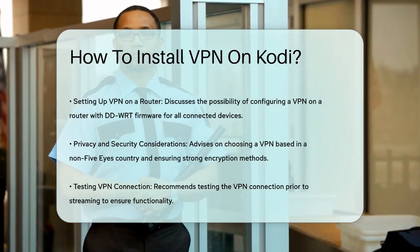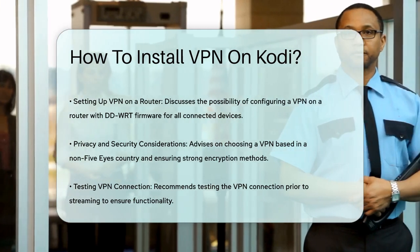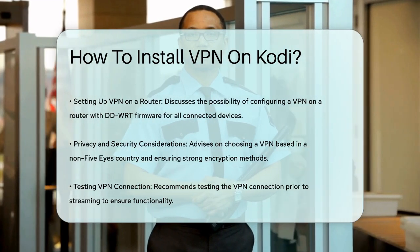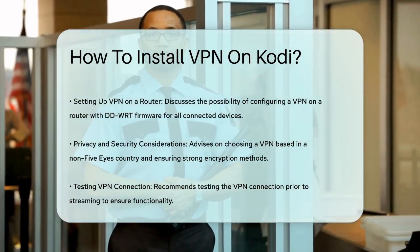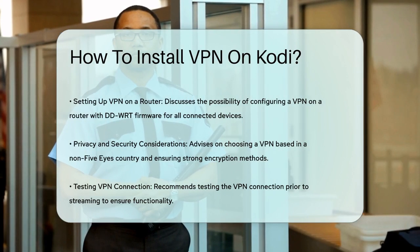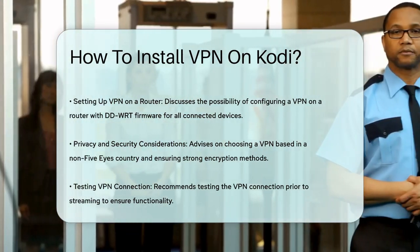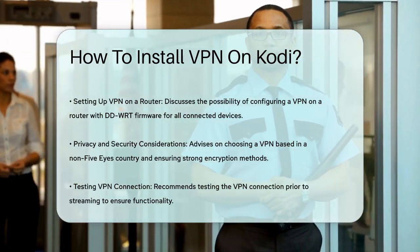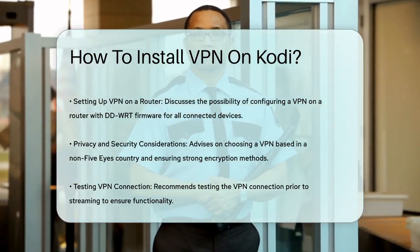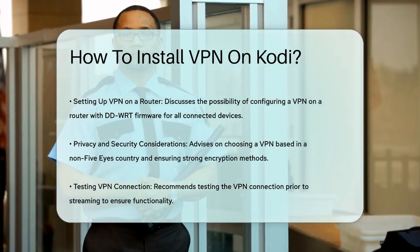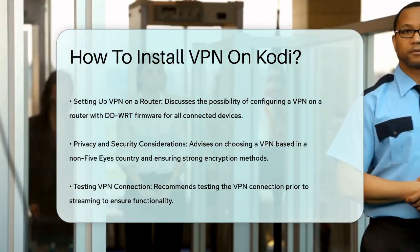When choosing a VPN, make sure it's based in a country that's not part of the Five Eyes Alliance and that it uses strong encryption like AES-256. Also, ensure the VPN doesn't log your IP addresses or web activity data. For streaming, select a VPN with fast upload and download speeds to avoid buffering. By following these steps, you can securely and privately enjoy your streaming experience on Kodi. Remember to always test your VPN connection to ensure it's working correctly before you start streaming.